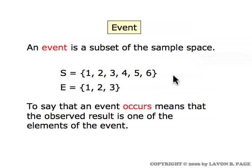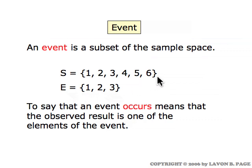Lots of games involve rolling dice. A die has six different numbers on it — it's a cube with six different numbers, one number on each of the faces. So if you're going to roll a die, the six possible outcomes are the numbers from one to six on the face that's facing up. Here the event E is a particular subset consisting of the numbers one, two, and three. When we talk about an event occurring, it simply means that the observed result is one of the elements of that set — so E occurs if the outcome is one, two, or three.